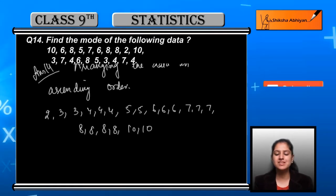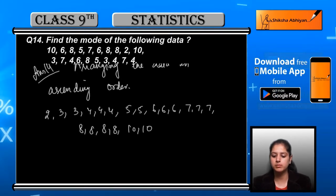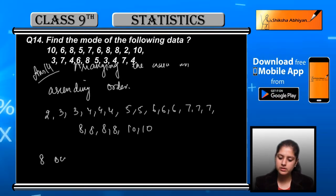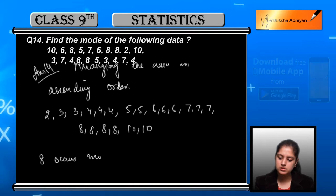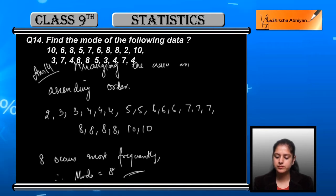Now it is clearly visible that 8 is the most frequently occurring number. 8 occurs most frequently, therefore mode is 8.